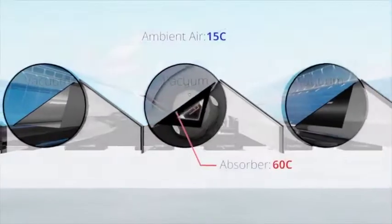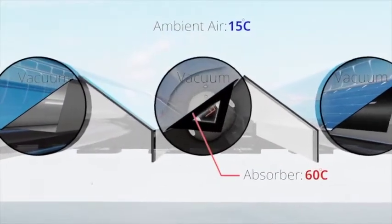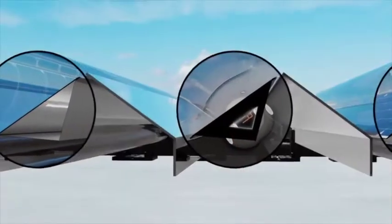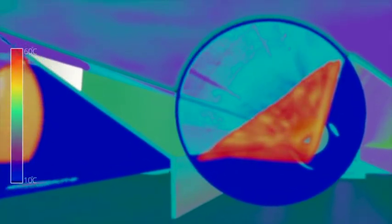The vacuum inside the tube dramatically reduces thermal losses, enabling Virtue to deliver higher temperature outputs for hot water and processed heat, even in colder climates.